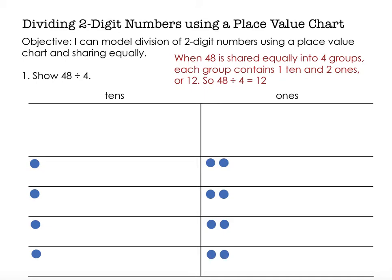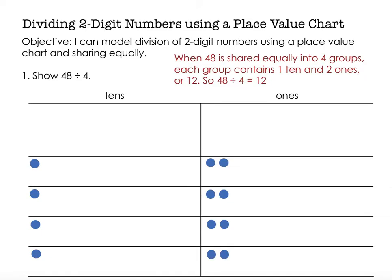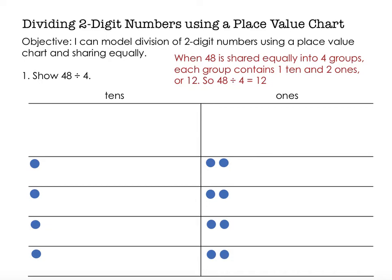Let's do another problem that's going to have a close to the same answer, but not exactly the same. Instead of 48, I want to divide 52 by 4. Both 48 and 52 are about 50, so I'm dividing about 50 by 4. I should get close to the same answer — something near 12 as well for my solution.